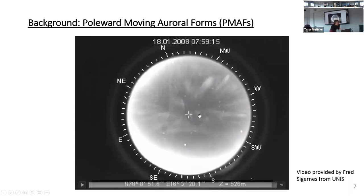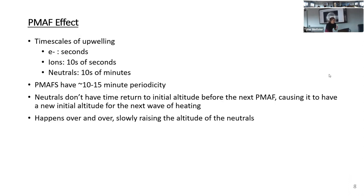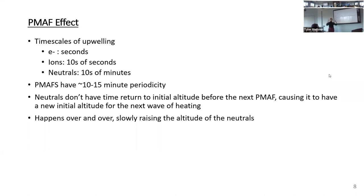PMAPs are aurora associated with field-aligned currents and precipitating electrons. Moving back to type 2 neutral upwelling and how PMAPs come together: the key lies in the timescales of how those particles move. Electrons are the first to heat up and move up in altitude — on the order of seconds. Ions follow pretty closely, with a slight lag of tens of seconds, following that ambipolar field. But neutrals can take tens of minutes to rise from those collisions and reach higher altitudes.